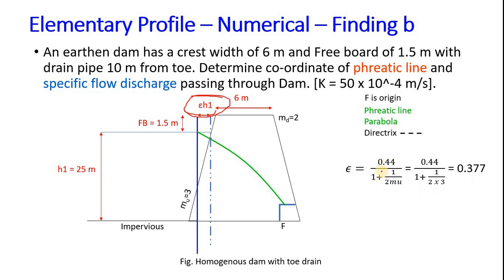Let's find epsilon h₁. Epsilon is given by 0.44 divided by (1 plus 1 divided by 2μ), where μ is 3, the upstream slope. When you put this value you get 0.377. Now once we know epsilon we will get epsilon h₁ which is 9.43 in this case.